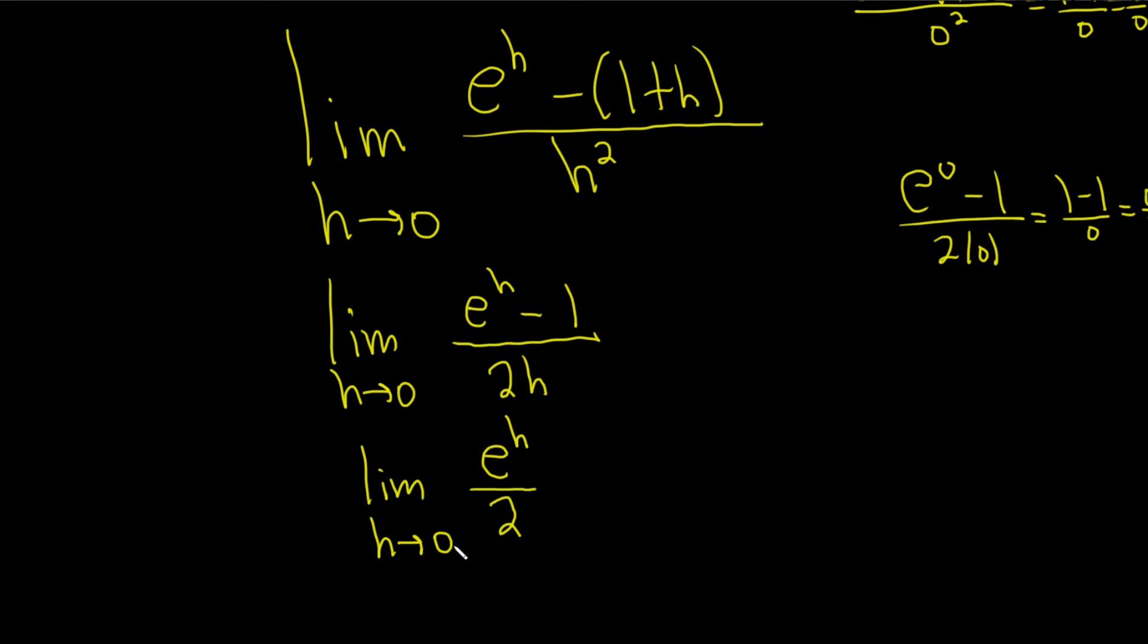Now we can actually just take the 0 and plug it in. We drop the limit sign because we're taking the limit now, so this is e to the 0 over 2. e to the 0 is 1, so we just get 1 over 2. And that is the final answer.